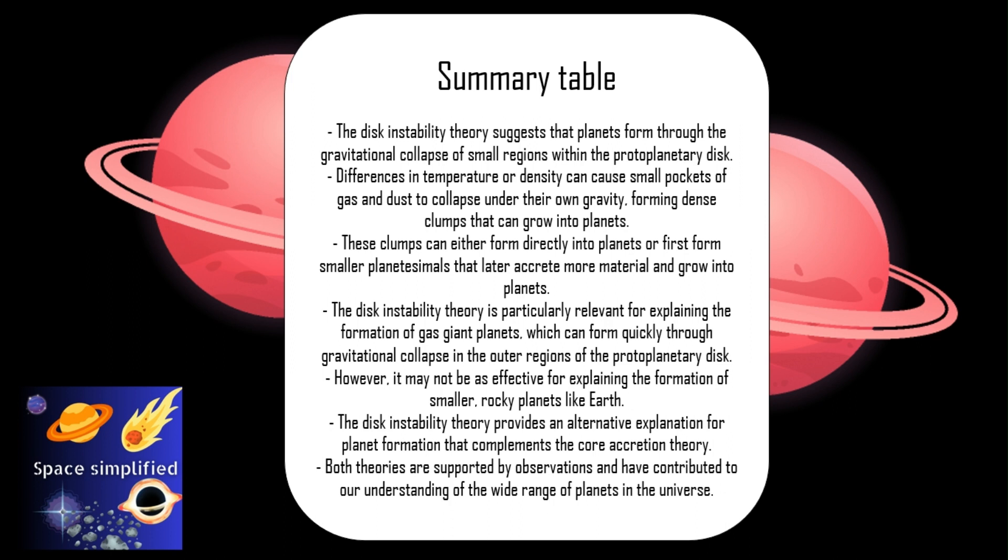To summarize, the disk instability theory proposes an alternative mechanism for planet formation where planets form through the gravitational collapse of small pockets of gas and dust within the protoplanetary disk. These dense clumps can either directly form into planets or into smaller planetesimals that later accrete more material and grow into planets.